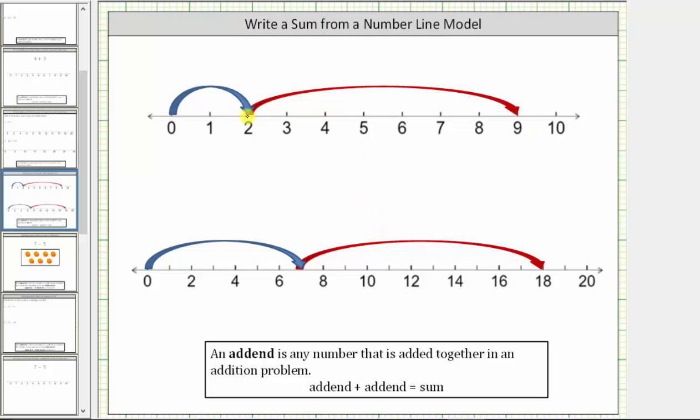Looking at the first model, because the blue arrow starts at zero and jumps to two, two is the first addend, which means we have two plus. Now we need to be careful about the second addend. Notice how the second arrow, or red arrow, starts at two and jumps to nine.